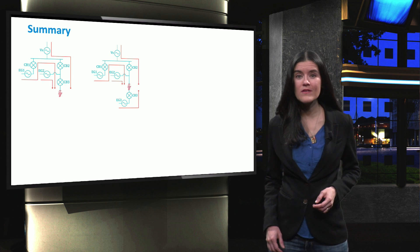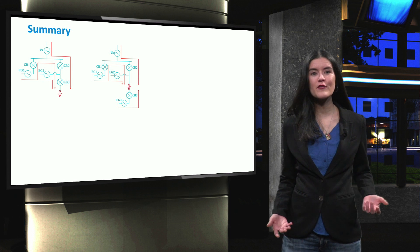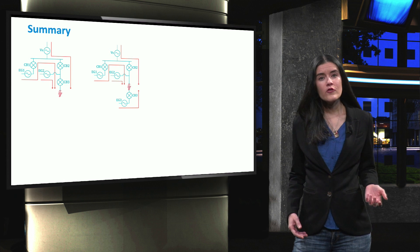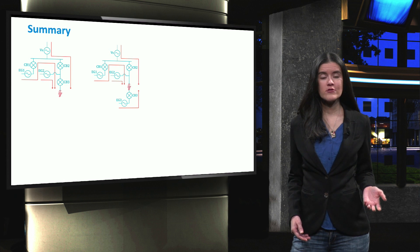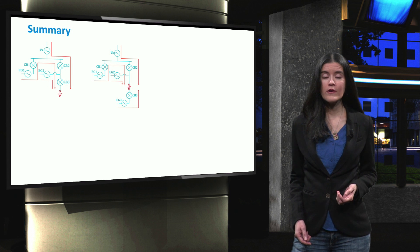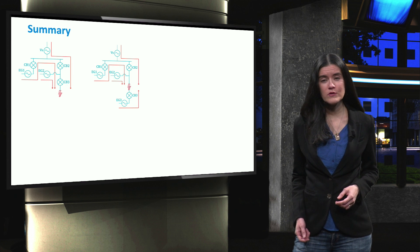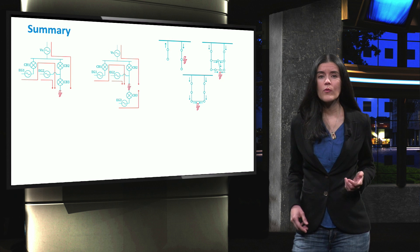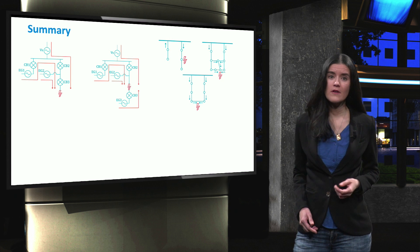In summary, we saw that the main protection challenges in microgrid consist of mal-operation or false-tripping of circuit breakers, due to lack of overcurrent protection coordination and change in current direction, change in the short circuit's current level between the islanded and grid-connected modes of operation, and changing network configurations.